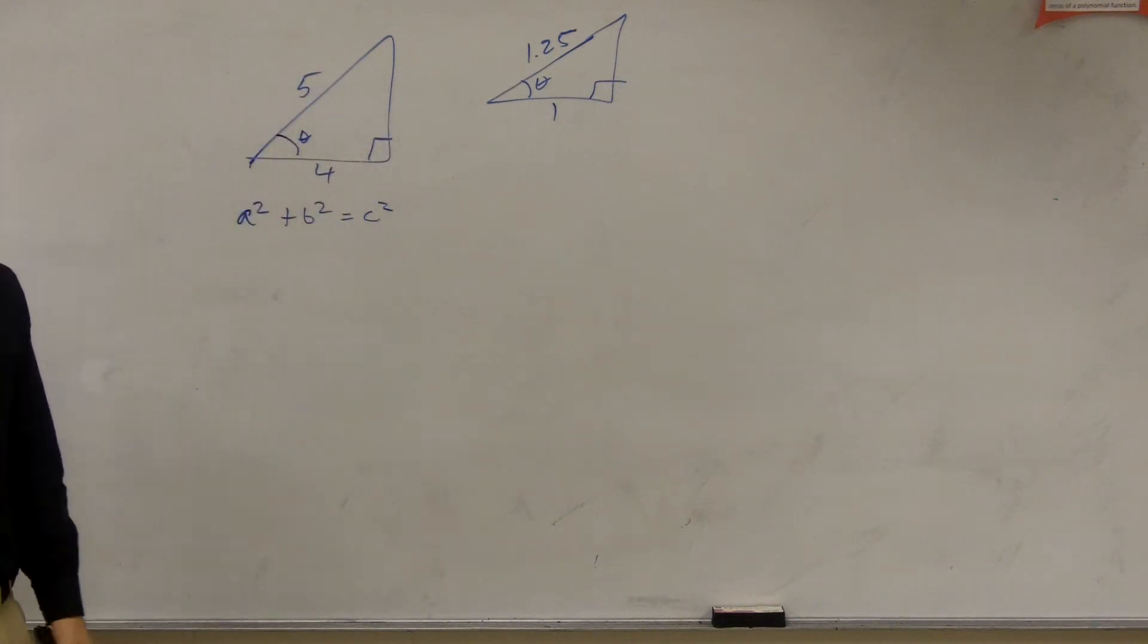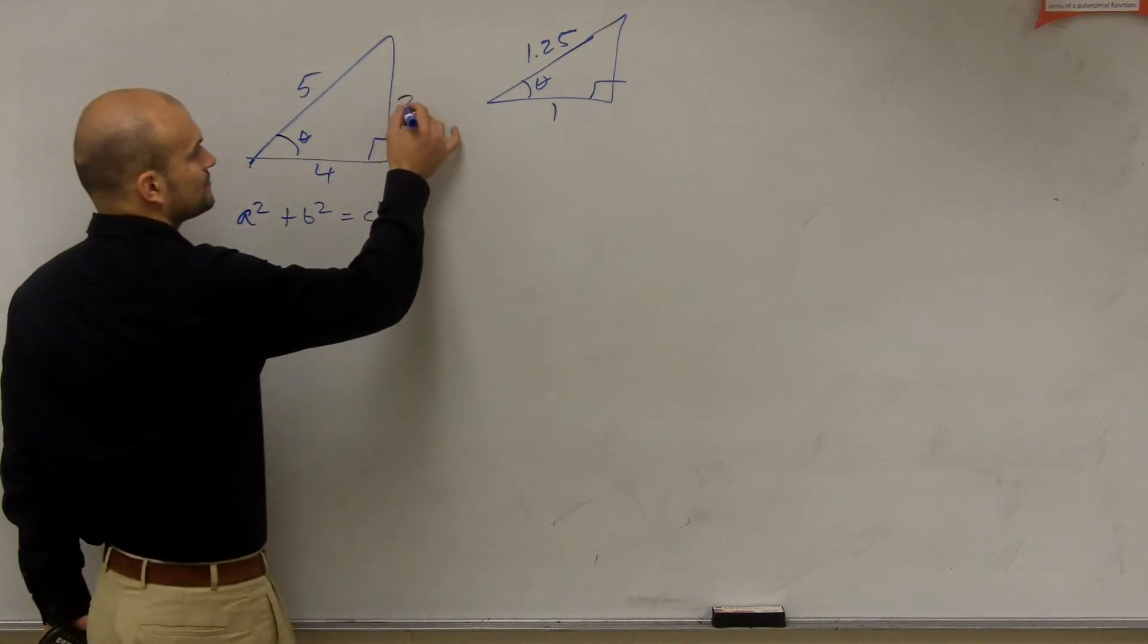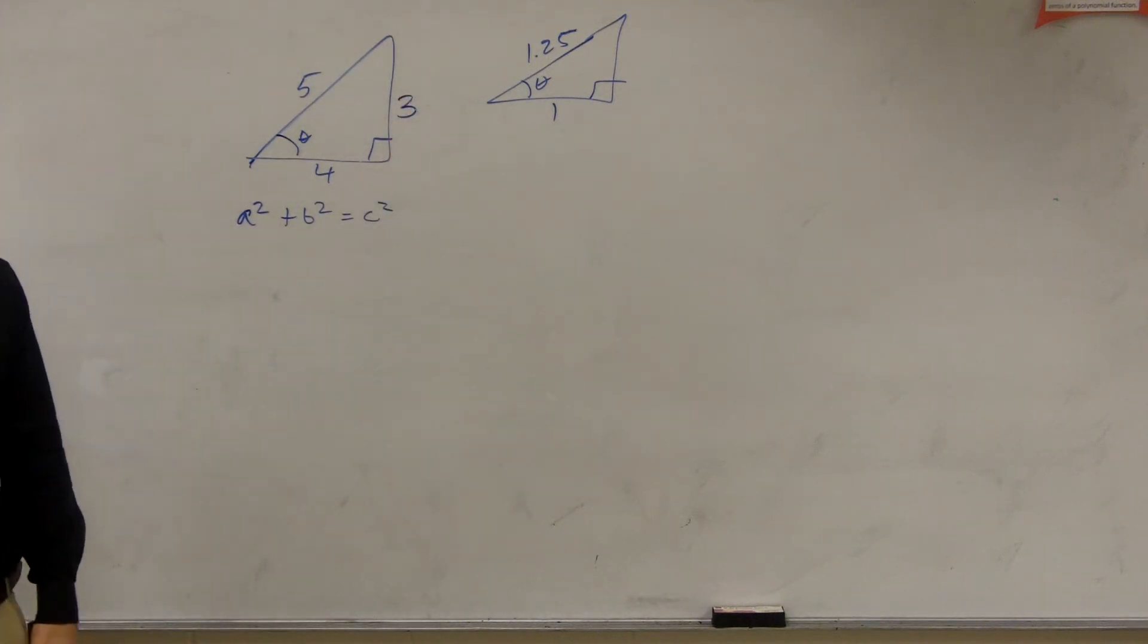Hopefully you guys can know 5, 4, when 5 is your hypotenuse and one leg is 4, that's a Pythagorean triple. So that leg is going to be 3.